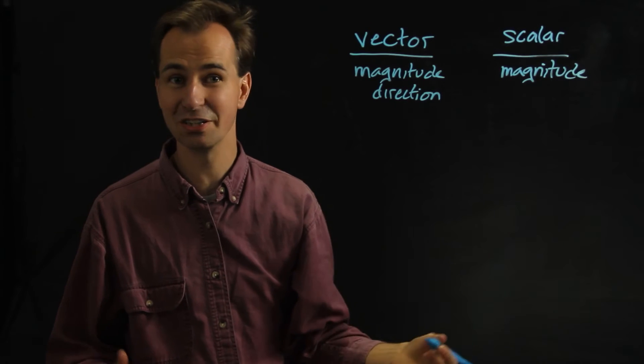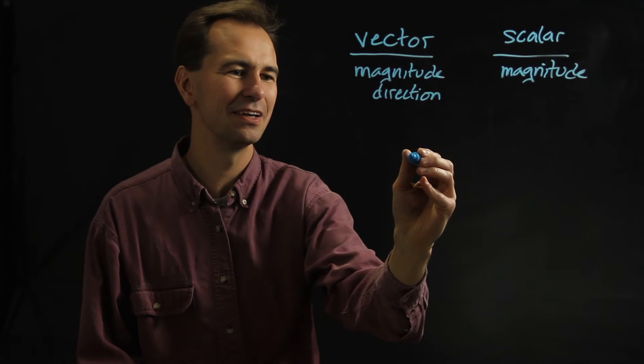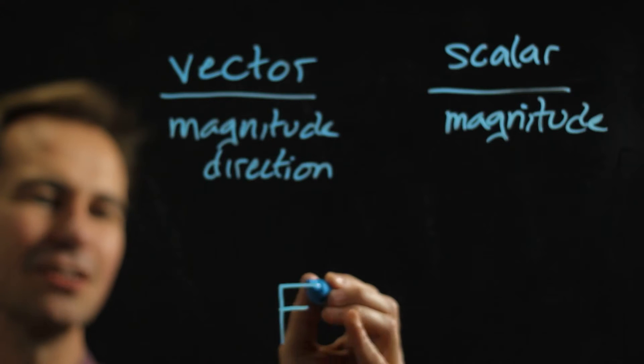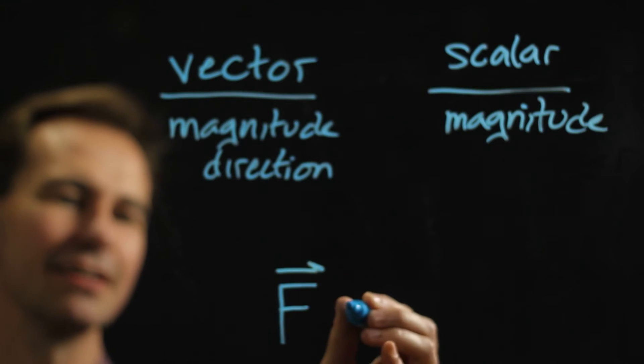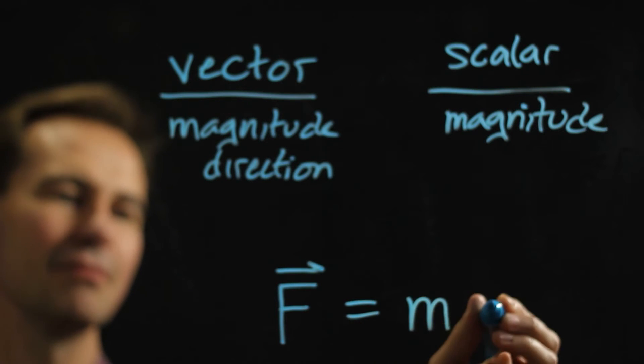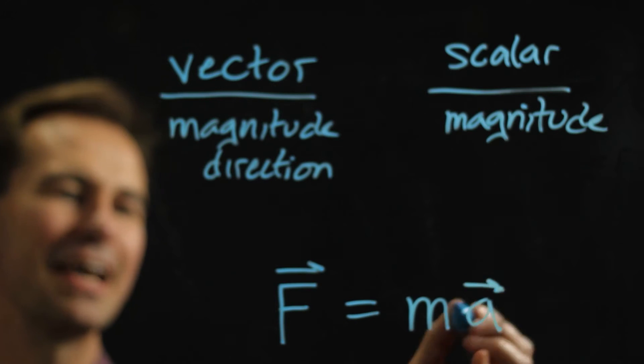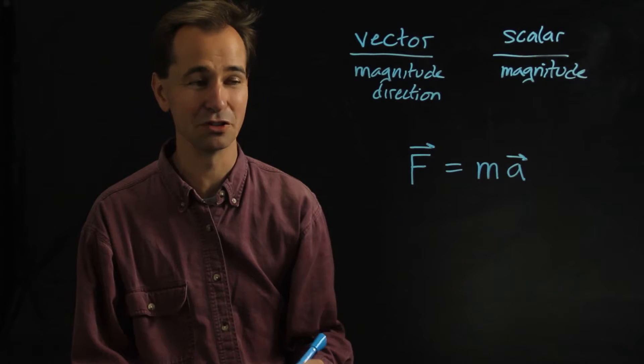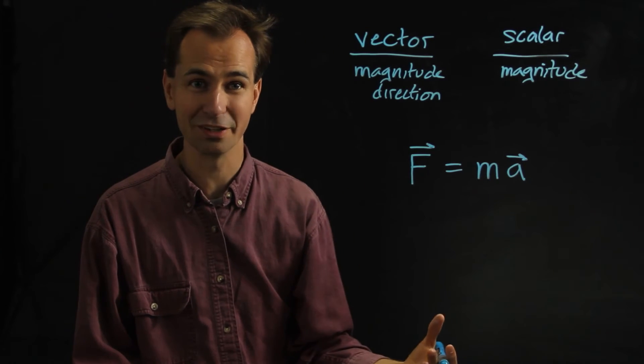For example, here's an equation where you might see an arrow. It's Newton's second law: F equals MA. You notice that the F and the A both have arrows over them. That means they are vector quantities.